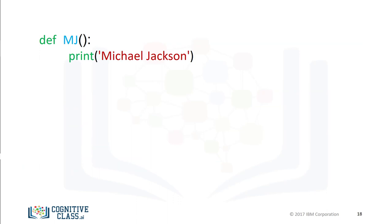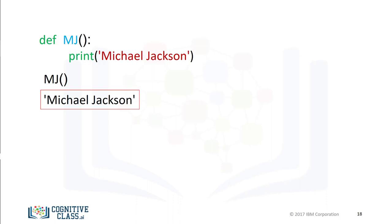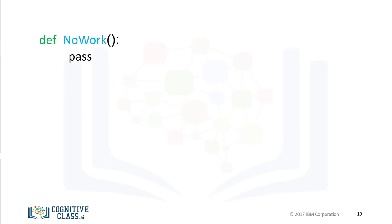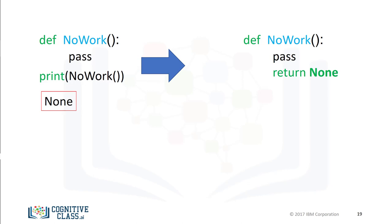In many cases, a function does not have a return statement. In these cases, Python will return the special None object. Practically speaking, if your function has no return statement, you can treat it as if the function returns nothing at all. The function mj simply prints the name Michael Jackson — we call the function and it prints Michael Jackson. If we define the function no_work that performs no task, Python doesn't allow a function to have an empty body, so we can use the keyword pass, which doesn't do anything but satisfies the requirement of a non-empty body. If we call the function and print it out, the function returns None.